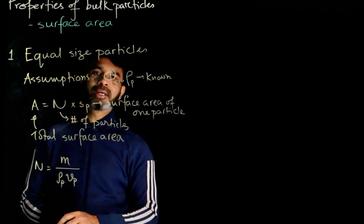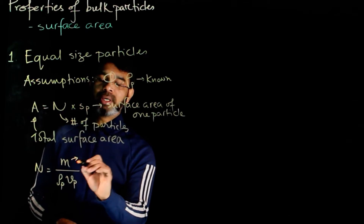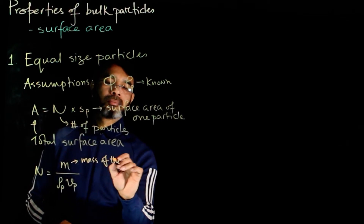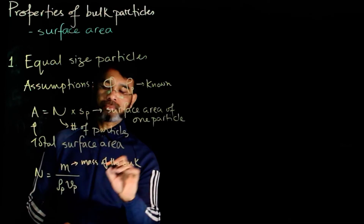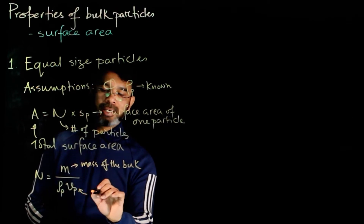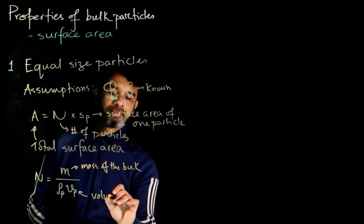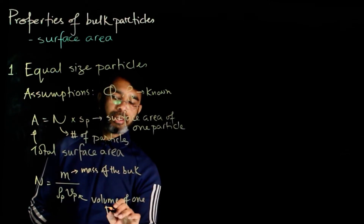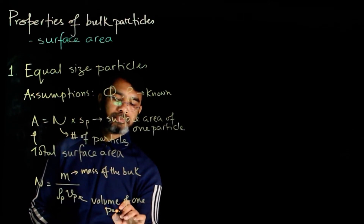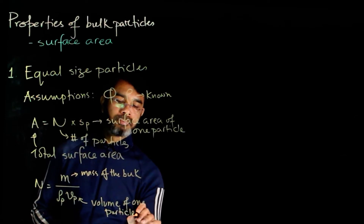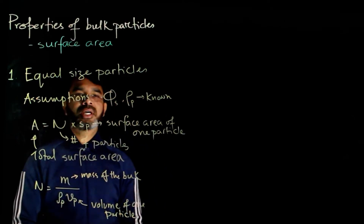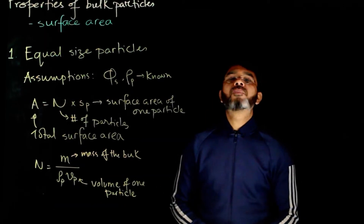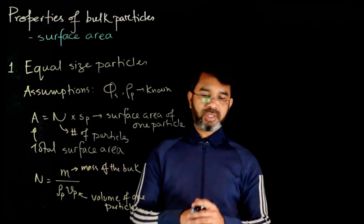So you have m as the mass of the bulk, vp is the volume of one particle, and rho_p is the density; n is the number of particles. Here comes into play the concept of sphericity.